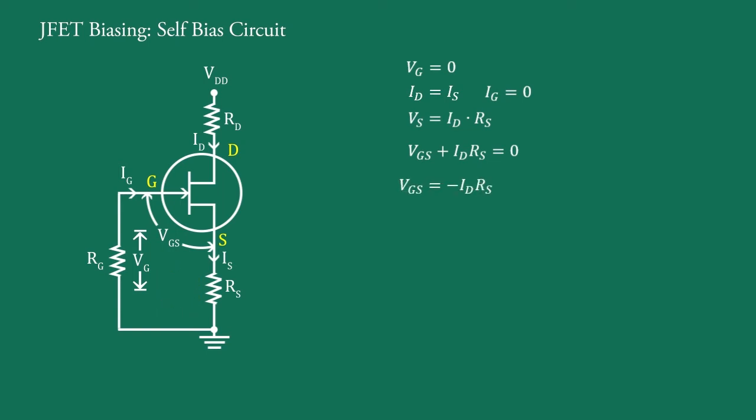Therefore VGS equals minus ID RS. It means the gate is at negative potential itself. Therefore it is known as self-bias circuit.